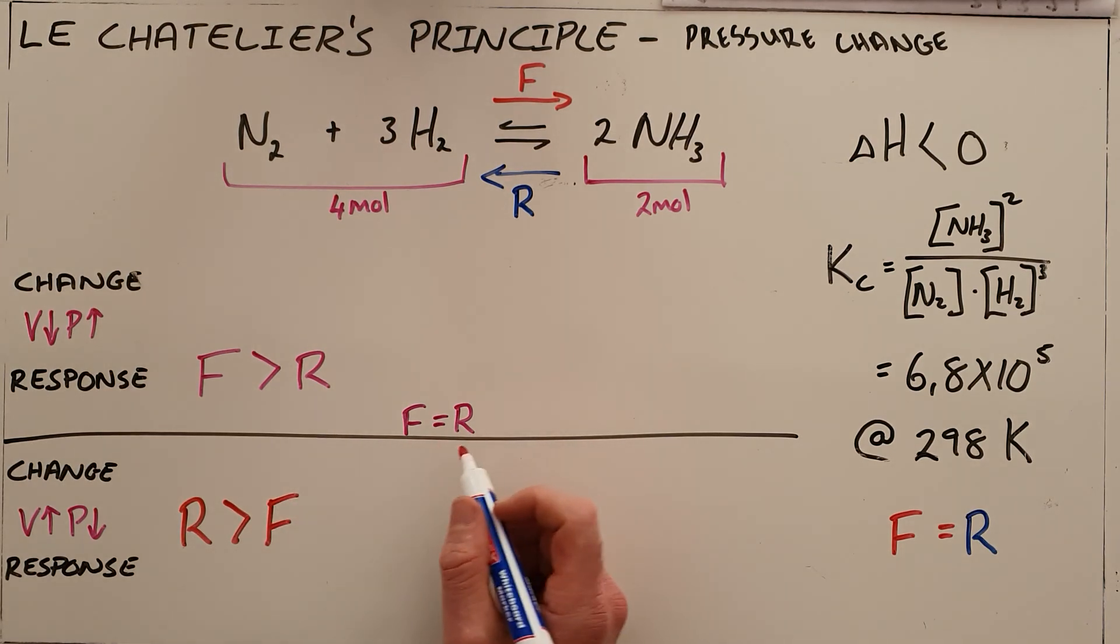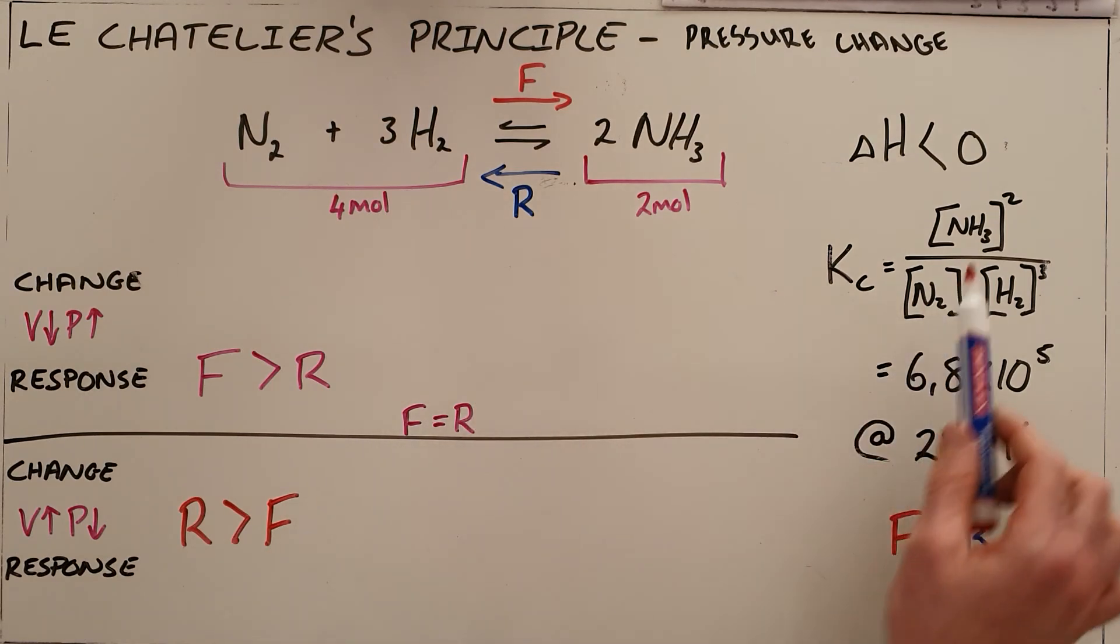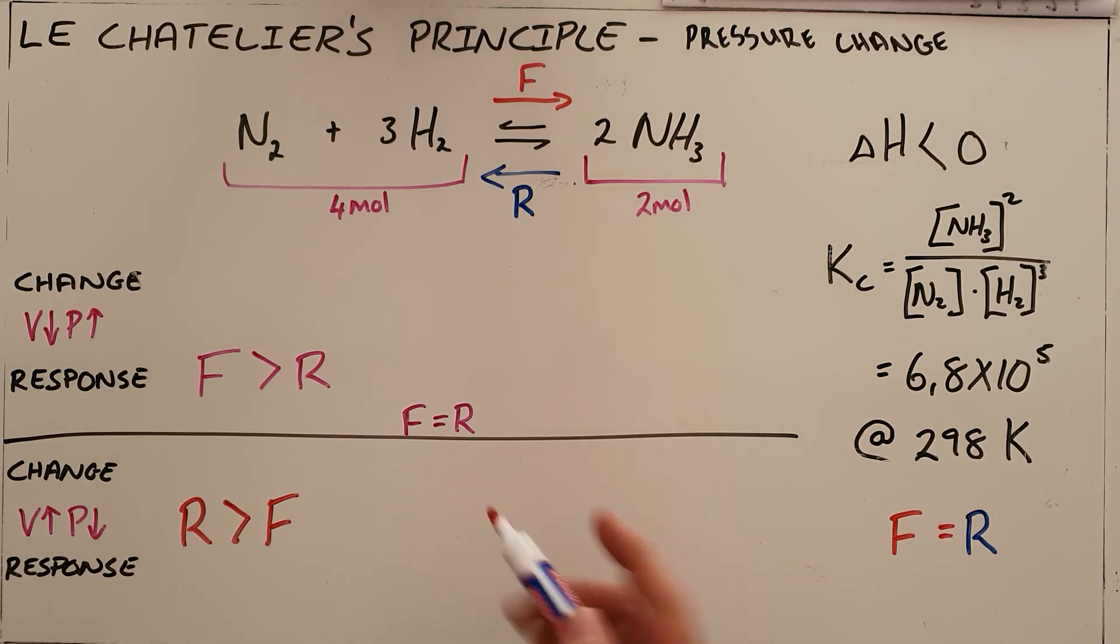Until once again equilibrium is re-established and the ratio of product to reactants reaches that value of Kc, where we say once again the rate of the forward equals the rate of the reverse reaction.